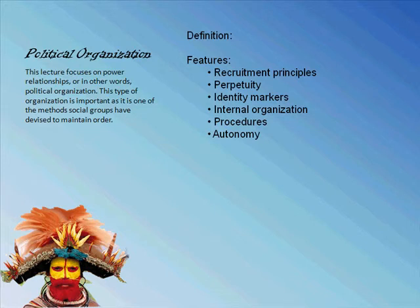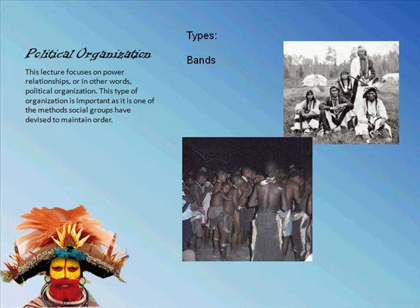We're going to start our discussion with the first type, which is a band. A band is a foraging group. The membership is pretty flexible — if people disagree, it's pretty easy to leave the band. If people act outside of what they're supposed to, they can generally get kicked out of the band. So membership is flexible.